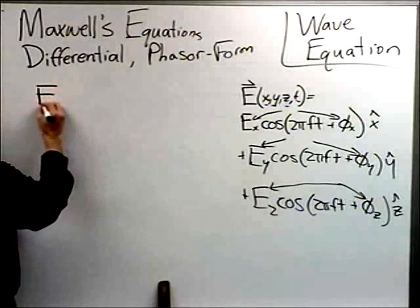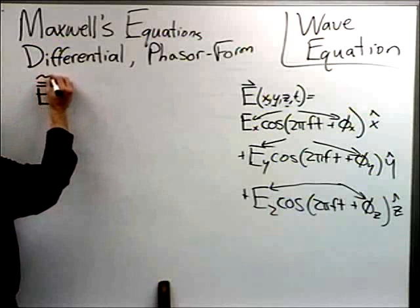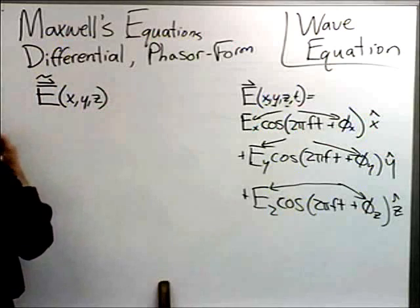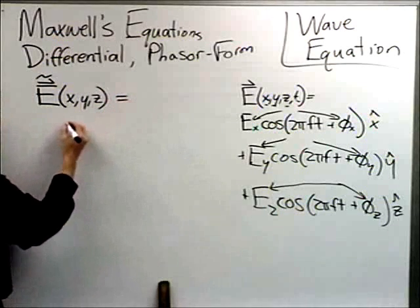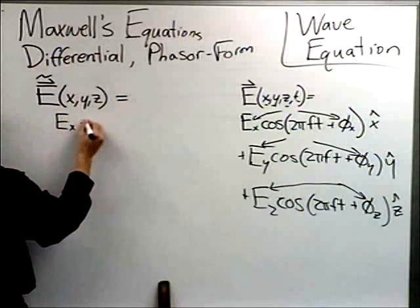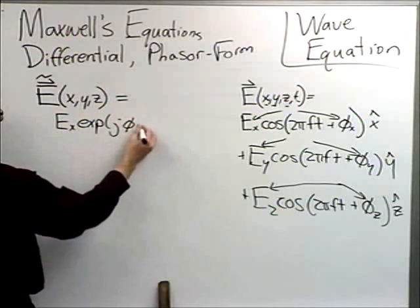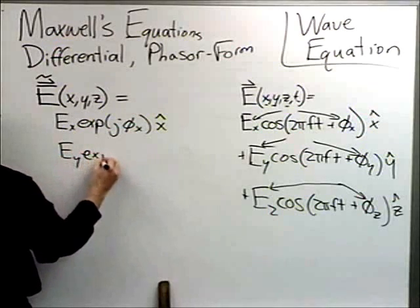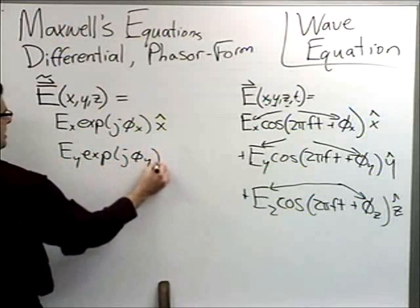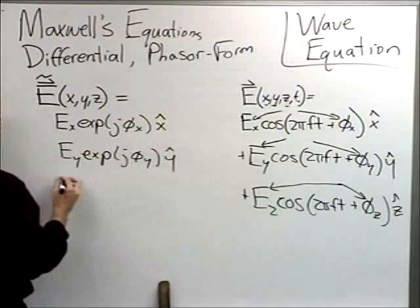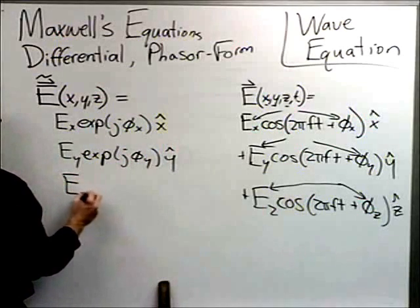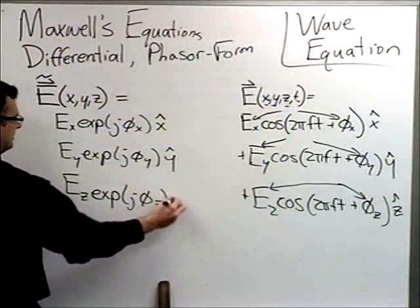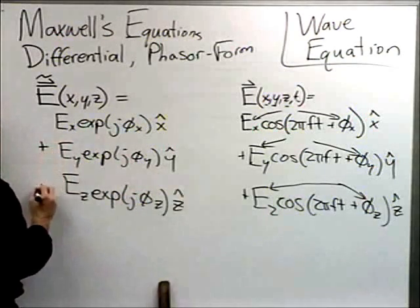In phasor form, we write the E-field phasor as: Ex·exp(jφx) x̂ + Ey·exp(jφy) ŷ + Ez·exp(jφz) ẑ — all components added together. The amplitudes Ex, Ey, Ez and phases φx, φy, φz are still functions of space.